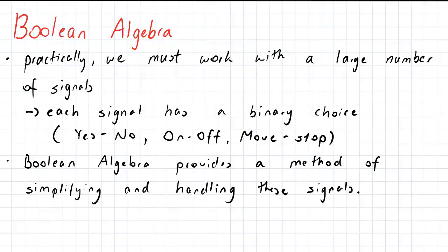Now each signal has some sort of binary choice, so for example it could be a yes or no, or an on or off switch mechanism, or a move or stop kind of thing. When things have a binary choice, Boolean algebra provides a method of simplifying and handling these signals as dictated by the logic gates.